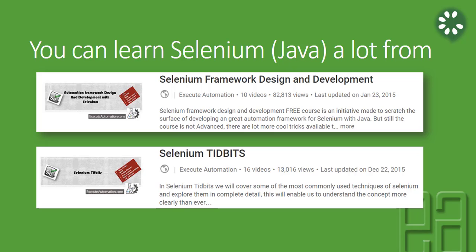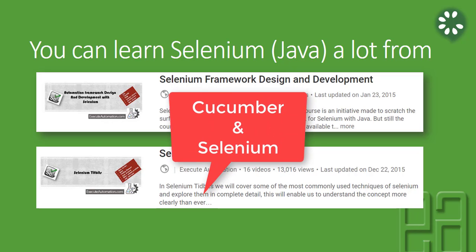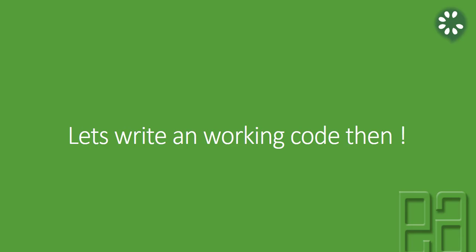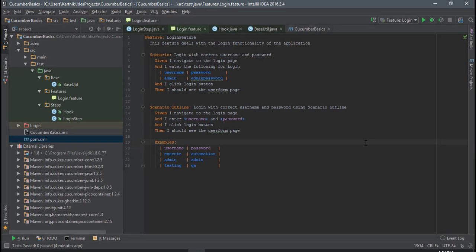We are not going to talk about Selenium a lot in this particular Cucumber with Selenium video series. Rather, we will see how things can be gelled together with Cucumber and Selenium. Let's start writing our code and see how things work. I'm going to flip to IntelliJ — this is the same project we have been working on in Section 1 of the Cucumber with Selenium video series.